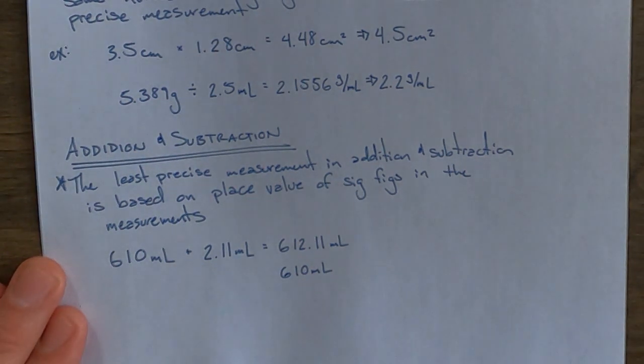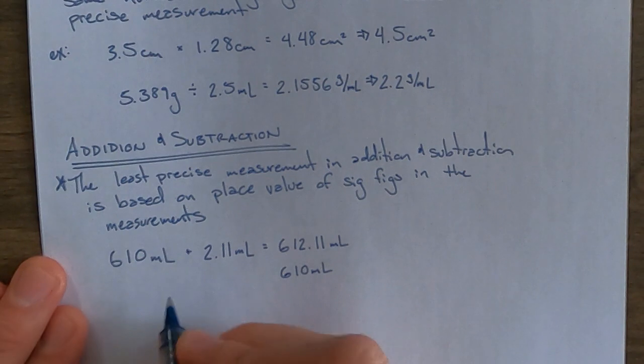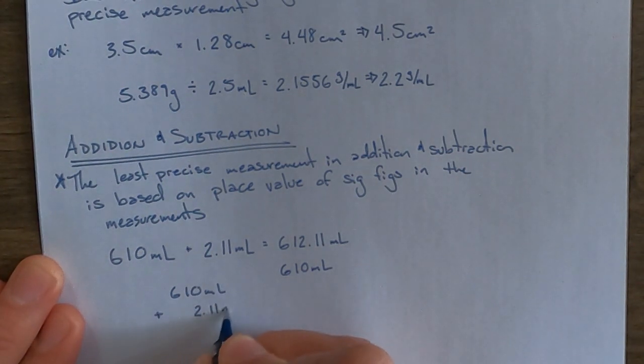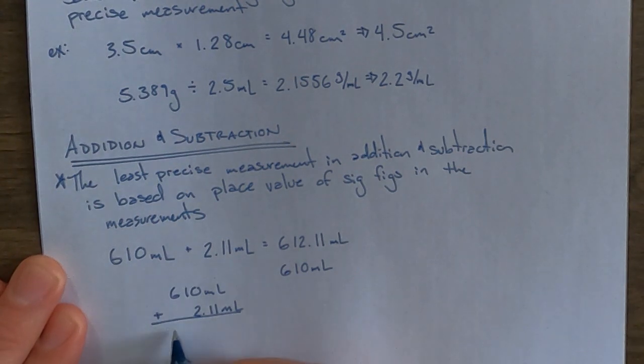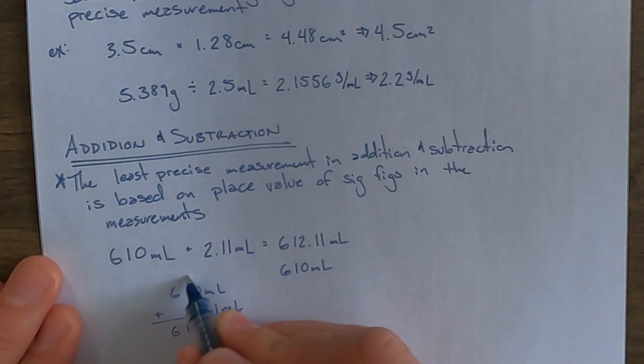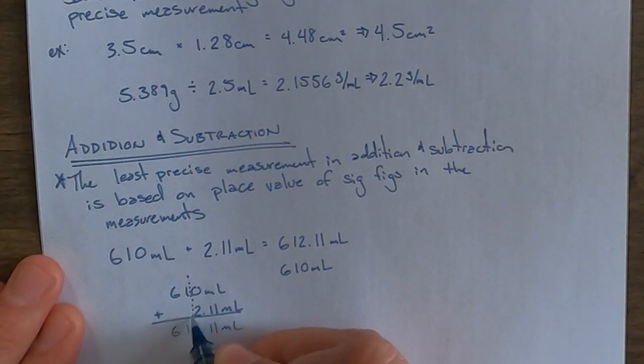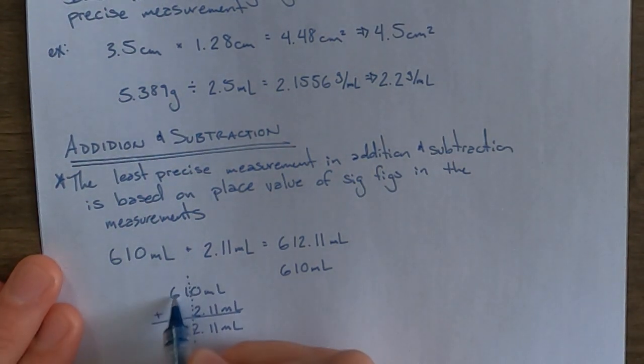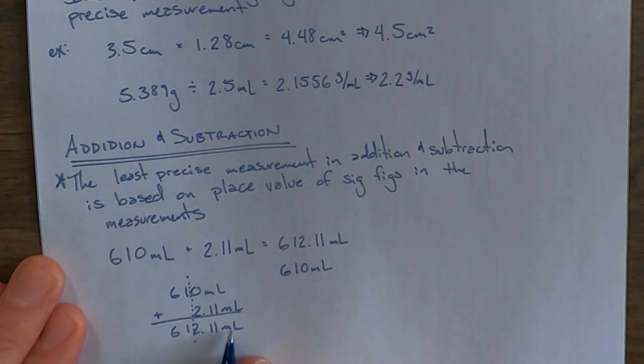Sometimes it's easier to set these up vertically to picture what's going on. So we've got 610 milliliters plus 2.11 milliliters. We get our answer 612.11 milliliters. And we draw a dotted line to show where the least precise figure was. And that kind of shows us where we need to round, that everything here needs to get dropped and possibly turned into placeholders if we need them to be. So that means this would be 610 milliliters.